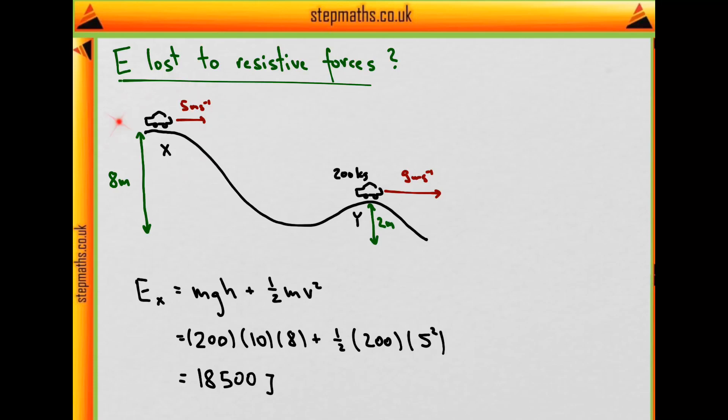That's the total energy it has at the top of the track. Some of it will be lost to resistive forces, and some will be kept as potential energy and kinetic energy.